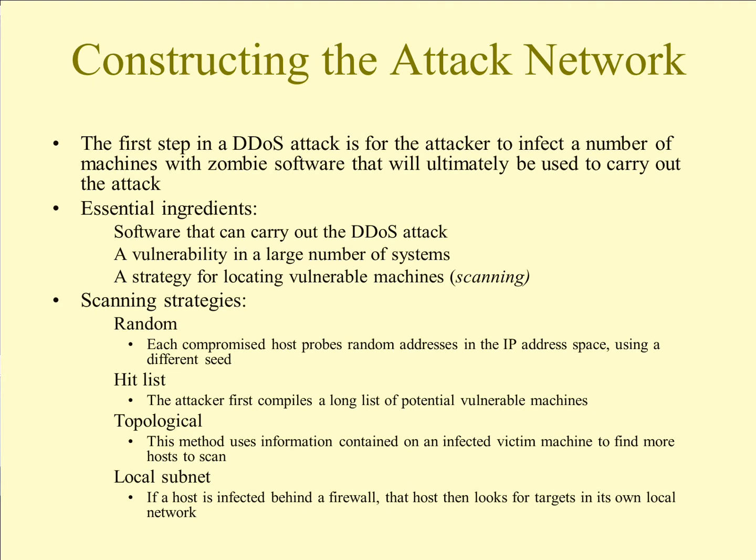There are a few different strategies for how you find these vulnerable machines. One is random: a compromised host probes random IP addresses in the address space, with each infected computer randomly choosing different IP addresses. A hit list is used if attacking something or someone specifically. Topological scanning uses information contained on an infected victim machine to find more hosts to scan, such as other computers communicated with recently in a cached file.